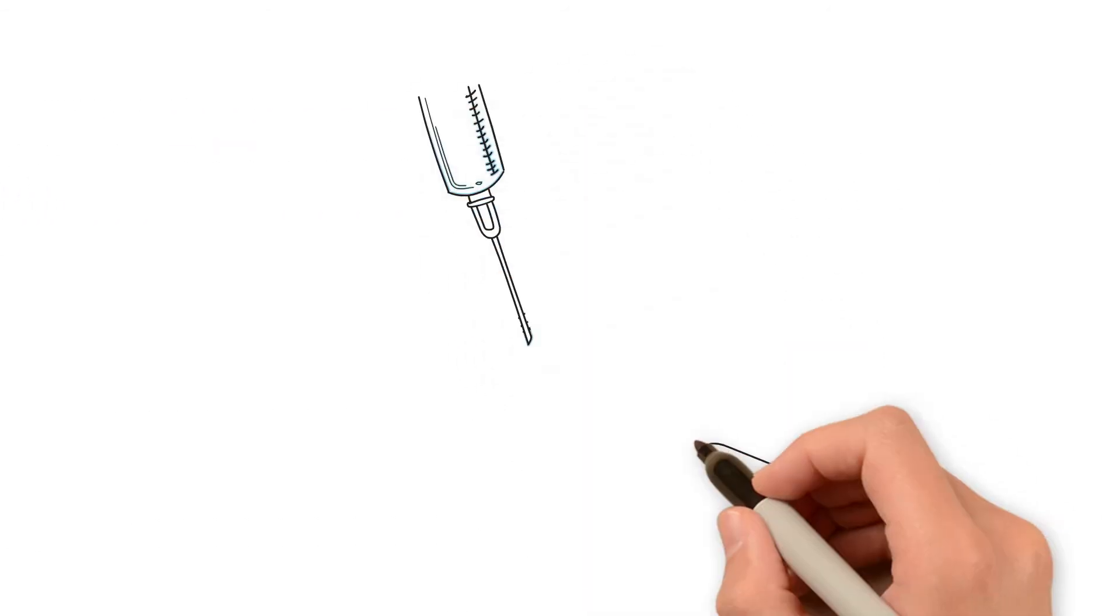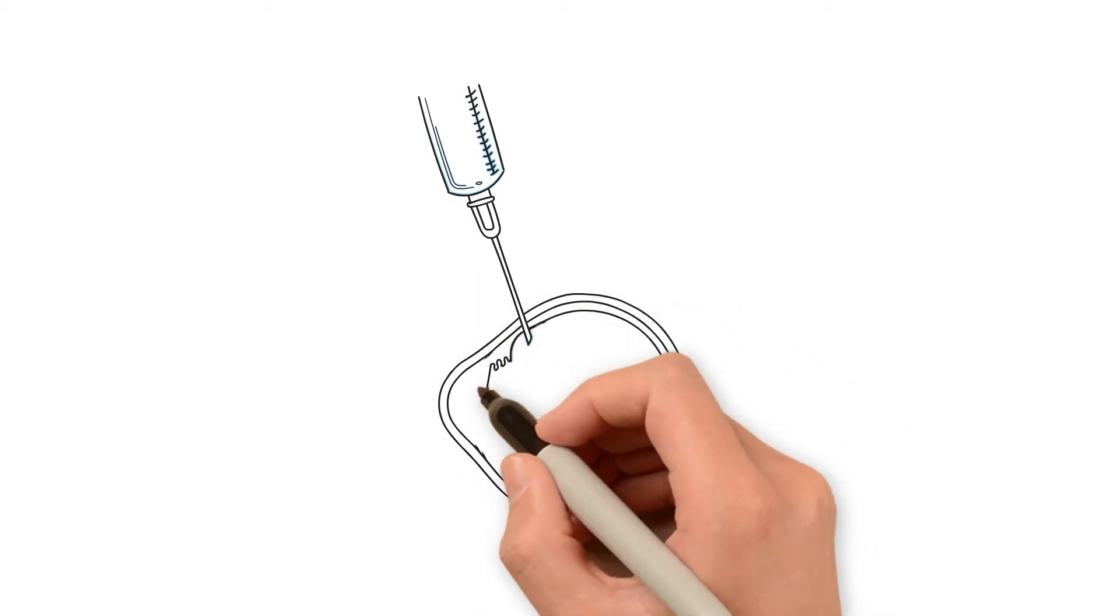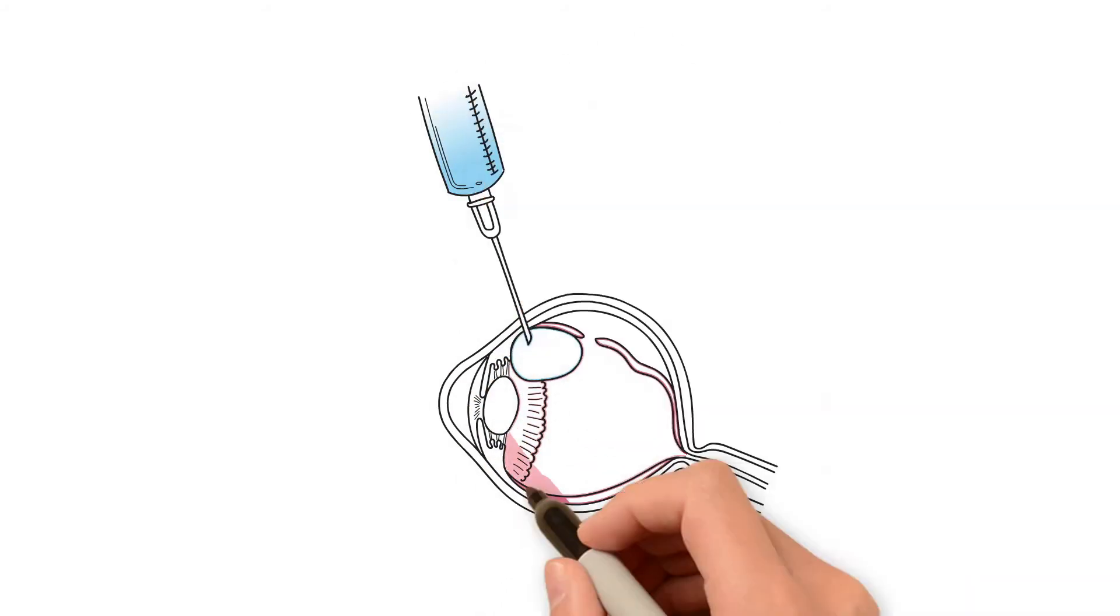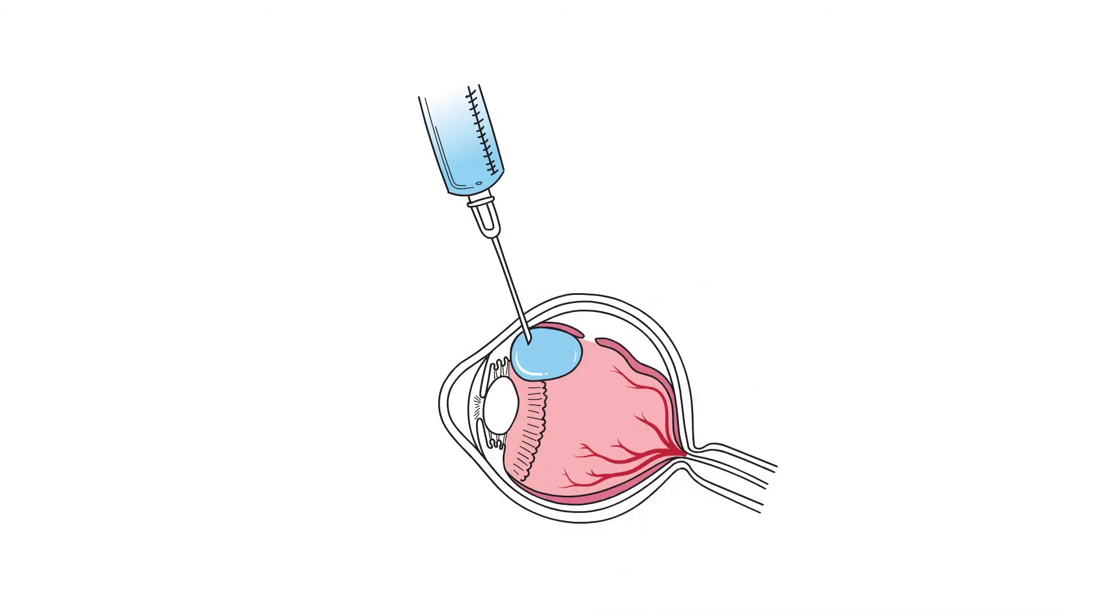During a pneumatic retinopexy, a gas bubble is injected into the center of the eye. The gas bubble presses against and seals the retinal tear, preventing additional fluid from entering through the tear. This allows the retinal pigment epithelium to naturally pump fluid out from behind the retina.